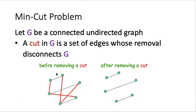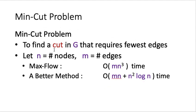Below we have an example. This is the original graph G. We can see that between any pair of vertices, there is a way to traverse from one vertex to the other using the edges. But if we remove all the red edges, then the graph becomes disconnected — there is no way to reach from one node to another. For the min-cut problem, our target is to find the cut in the graph such that it has the fewest number of edges.